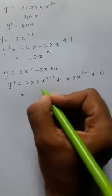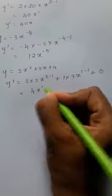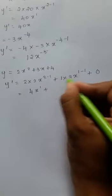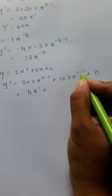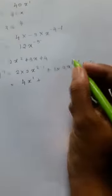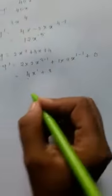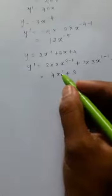Plus 1 into 3 is 3x to the power 1 minus 1 is 0. Anything to the power 0 gives me 1, so this is 3. That's it. That's my derivative.